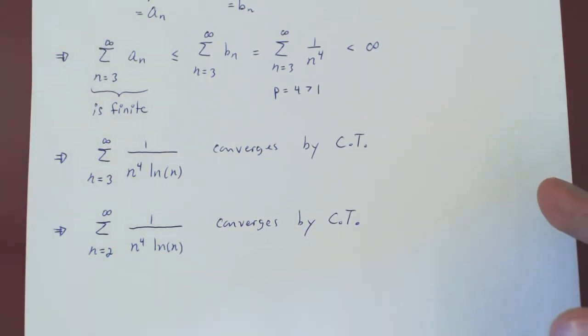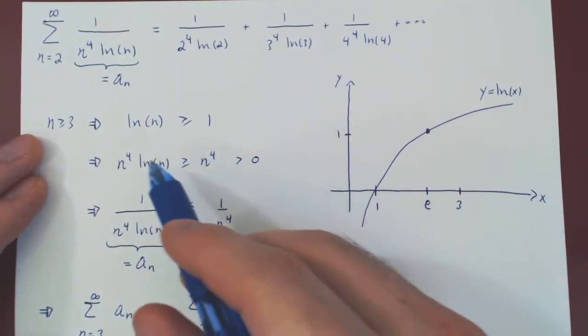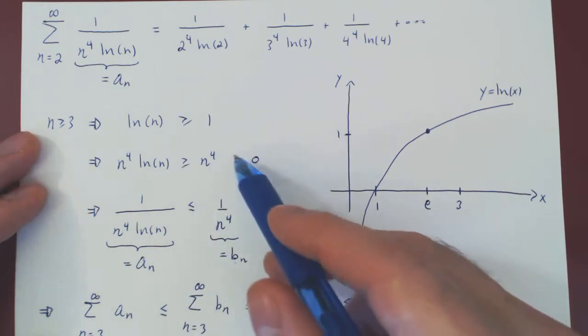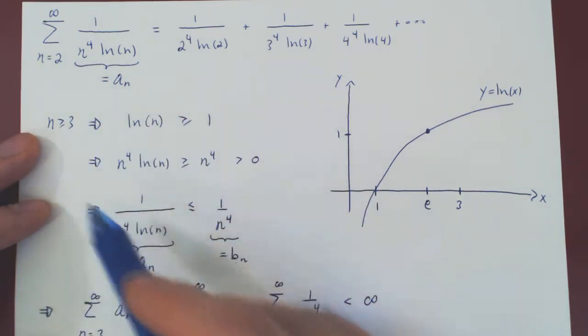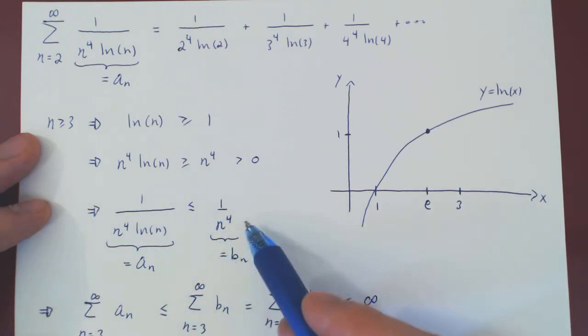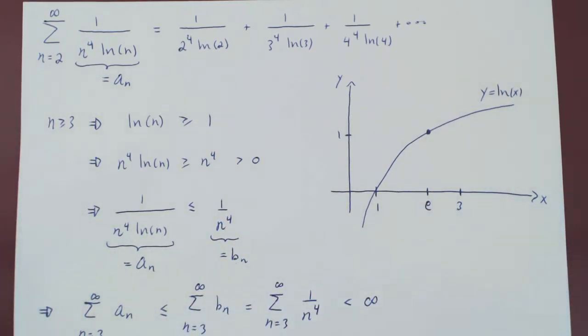So, the whole point is to remember that it's okay if inequalities that you derive are not valid when the series begin. As long as they're valid at some point and they yield the desired result, we know that when we deal with convergence, when we're not trying to evaluate the series, but only figure out whether we have convergence or divergence,